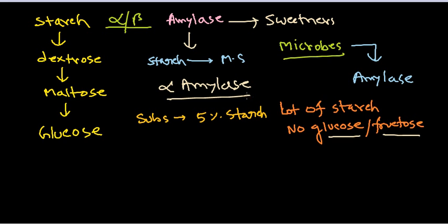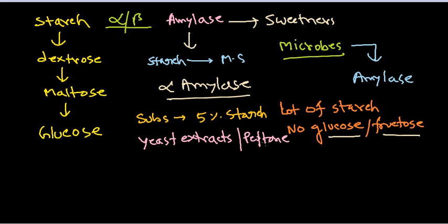Additional salts like magnesium sulfate and calcium chloride are also used. Along with the starch and salts, we include yeast extract and peptone as basic microbial food sources so that the bacteria can grow.